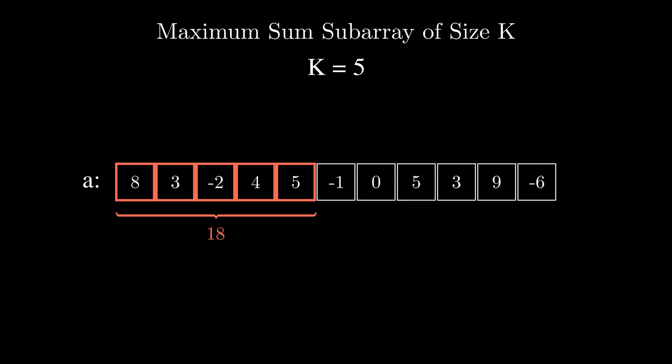So a classic problem where the sliding window technique can be used to find an optimal answer goes like this. Imagine that you're given an array of numbers and you're asked to find a subarray of length k with a maximum sum out of all the subarrays of length k.